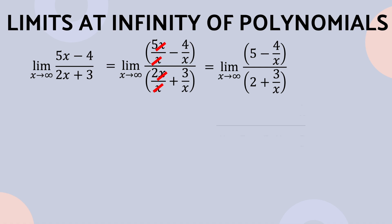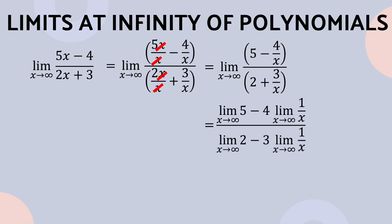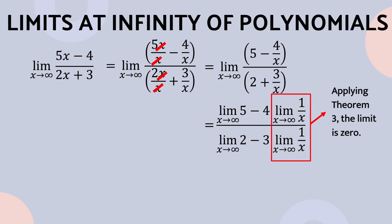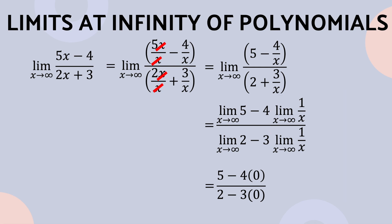Then, we rewrite the limit of the fraction by applying limit laws. Then, we rewrite the limit of each term. Afterwards, we simplify the fraction. Therefore, the limit of the function 5x minus 4 all over 2x plus 3 as x approaches positive infinity is 5 over 2.